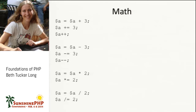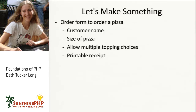PHP can do math for you. Addition uses the plus sign: `$a = $a + 3`. PHP parses everything on the right side of the equal sign before assigning it back, so you can use a variable in its own definition. Shorthand for addition is `$a += 3`, and incrementing by one is `$a++`. Subtraction uses a hyphen: `$a = $a - 3`, or `$a -= 3`, or `$a--`. Multiplication uses the asterisk: `$a * 2` or `$a *= 2`. Division uses a forward slash: `$a / 2` or `$a /= 2`.